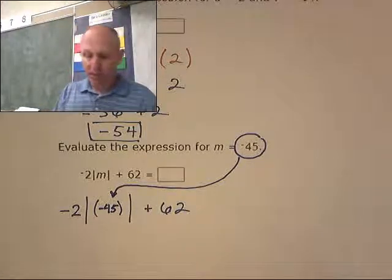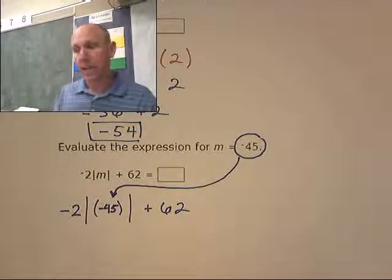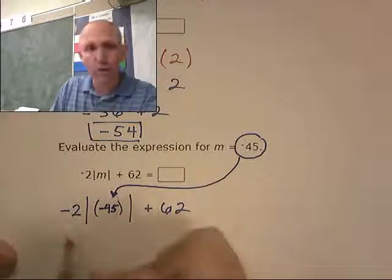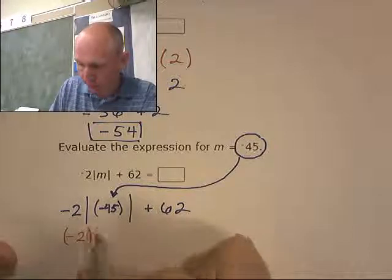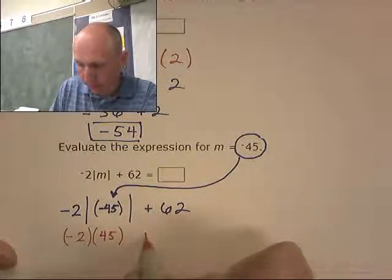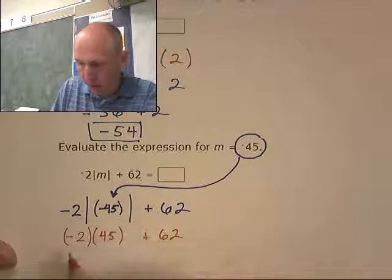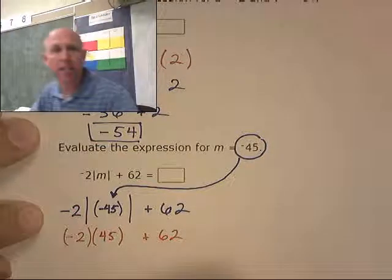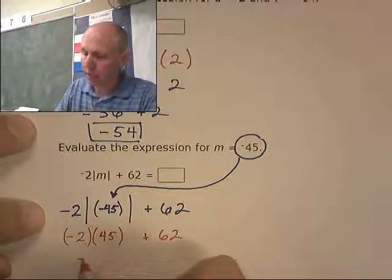I need to know what the absolute value of negative 45 is. The absolute value of negative 45, which is 45. So this is negative 2 times 45 plus 62. 2 times 45, well, that's 90, but it's a negative 2. So it's a negative 90.